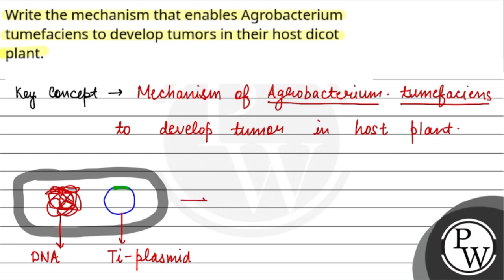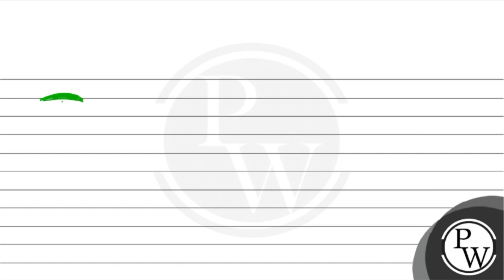So what happens when this bacteria affects the plant? In that case, the Ti plasmid — specifically a part of it called T-DNA — goes into the plant cells.